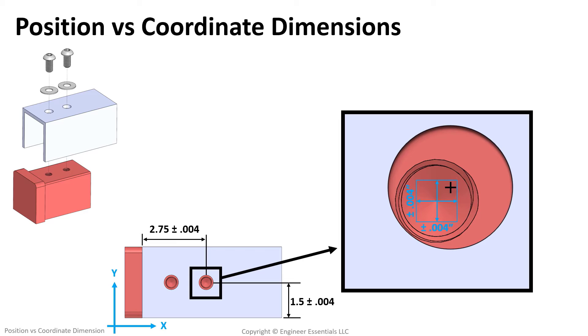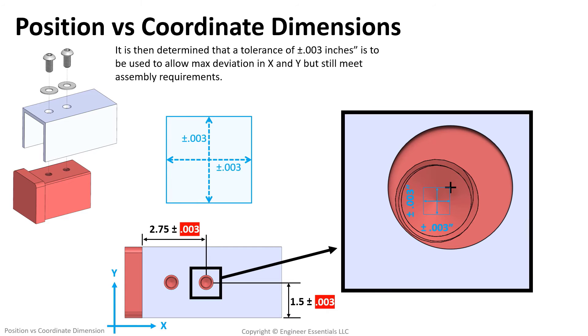So the solution would be to find the combination of deviations that when both X and Y deviated the most, the parts still assembled. With some simple trigonometry and math, we can find that plus or minus three thousandths in X and three thousandths in Y will result in a guaranteed assembly condition, even if both are found to be at their maximum deviation.